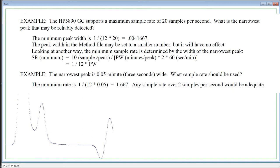Looking at another way, the minimum sample rate is determined by the width of the narrowest peak. Sample rate minimum equals 10 samples divided by peak divided by peak width minutes divided by peak multiplied by 2 multiplied by 60 seconds divided by minutes equals 1 divided by 12 asterisk peak width.